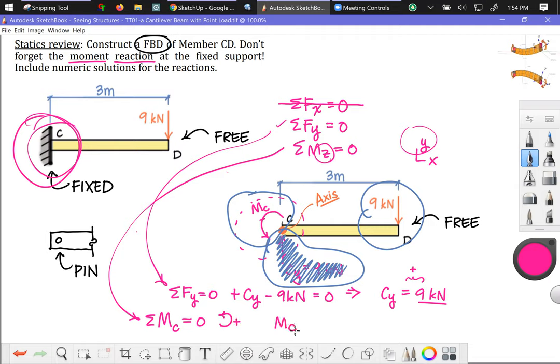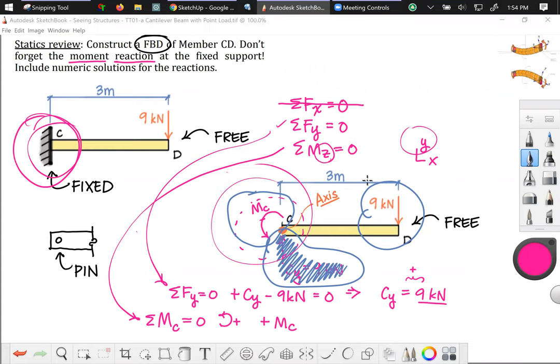The sign convention we want to use is that counterclockwise is defined as positive. First term M sub C. M sub C is counterclockwise, and so I give that a positive sign. Okay, another way to think about this, if you're used to using the right hand rule for vectors, take your right hand, curl your fingers with M sub C, thumbs up positive. You follow that? Take your right hand, curl the fingers of your right hand with the rotation M sub C, thumbs up positive.